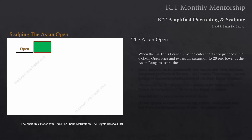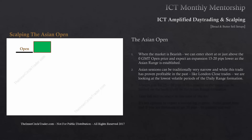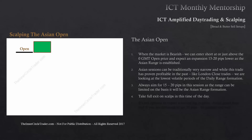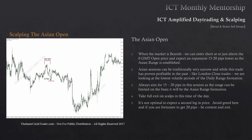When the market is bearish, we can enter short at or just above the zero GMT opening price and expect an expansion of 15 to 20 pips lower as the Asian range is established. Asian sessions can be traditionally very narrow, and while this trade has proven profitable in the past, like London close trades, we are looking at the lowest volatile periods of the daily range formation. Always aim for 15 to 20 pips in the session as the range can be limited — take full exit on scalps in this time of day. It's not optimal to expect a second leg in price. Avoid greed here, and if you're fortunate to get 20 pips, be content and exit. Here's an example of the Asian session opening and selling short at the opening of 8pm New York time for a sale.